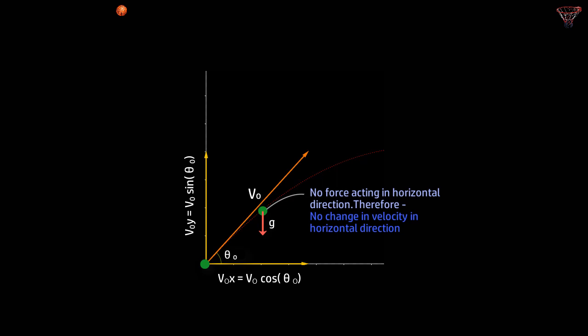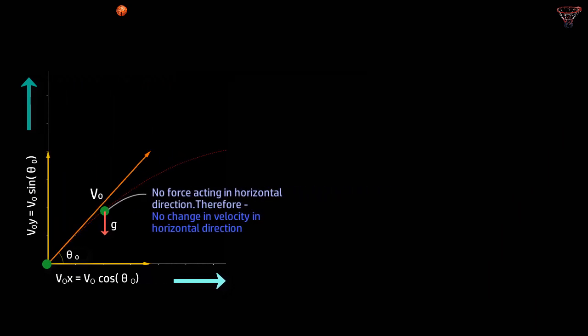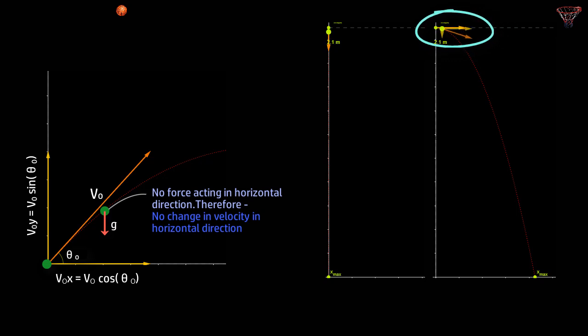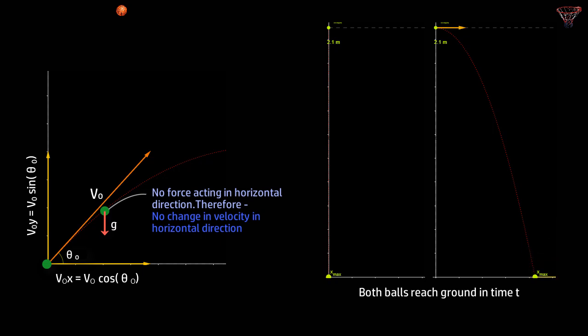Another piece of information that makes projectile motion less complicated is that you can study the vertical part of the motion and the horizontal part totally separately — the two have no effect on each other. This is demonstrated by a famous experiment where a ball dropped from height h takes time t to reach the ground, and the same ball thrown from the same height with a horizontal velocity also reaches the ground in the same time t, showing that horizontal velocity has no effect on vertical motion.